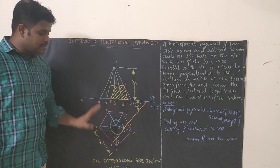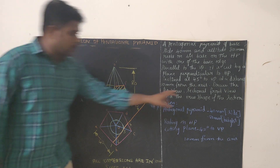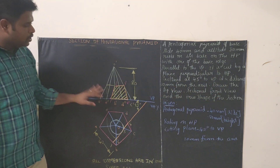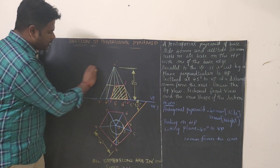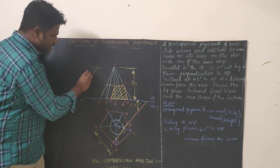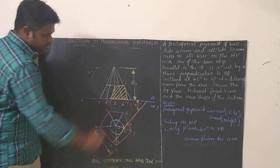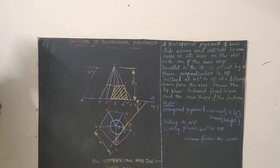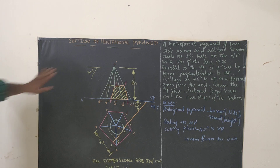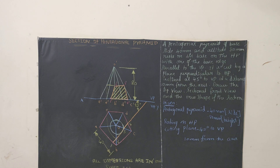We have now obtained the sectional front view. After getting all the section points in the front view, do hatching: draw a base reference line at 45 degrees and draw equally spaced hatch lines at 45 degrees angle with equal spacing. After hatching, you can rub off the construction lines. So we have obtained the sectional front view. Next, we will draw the true shape of the section.